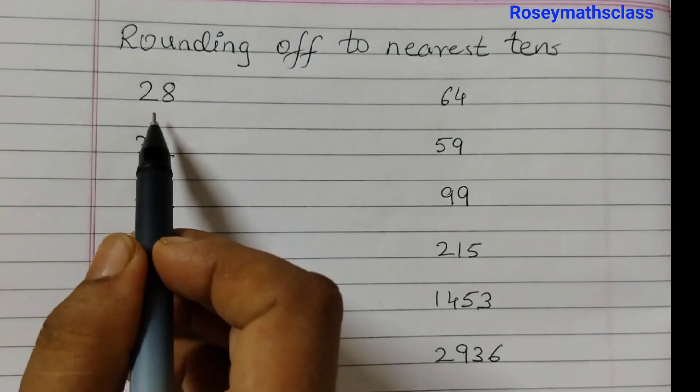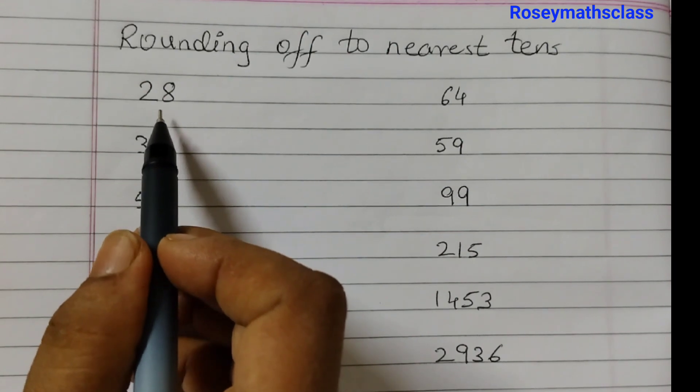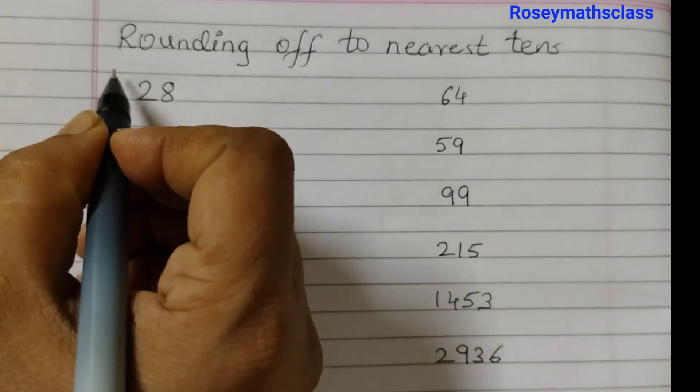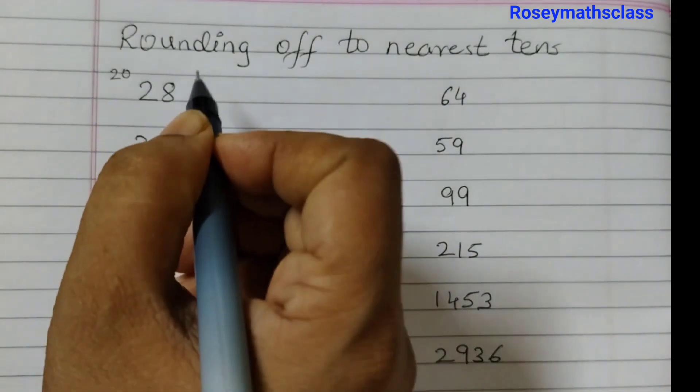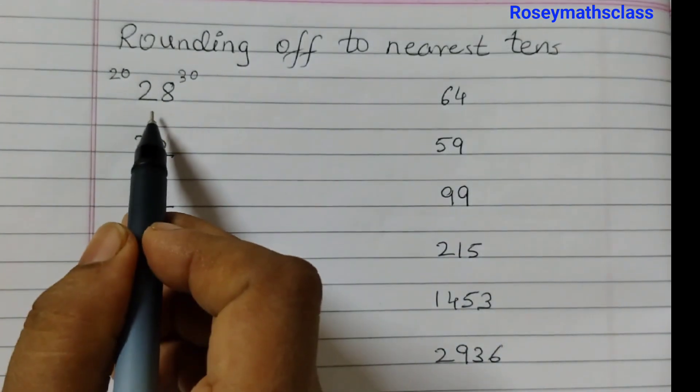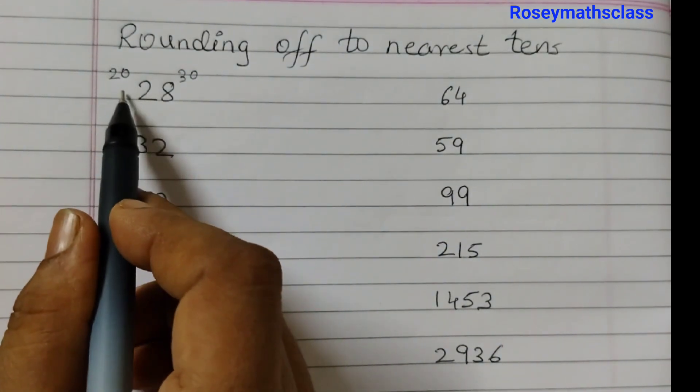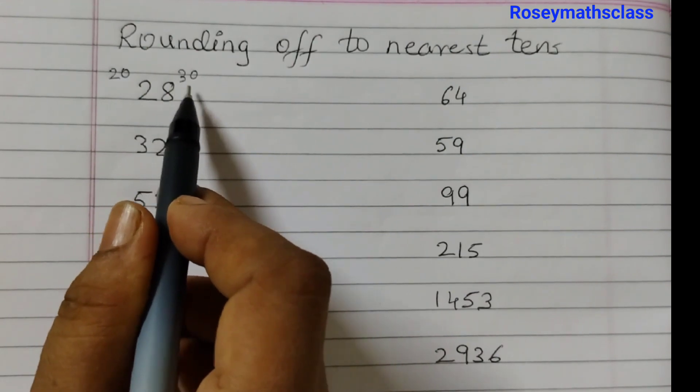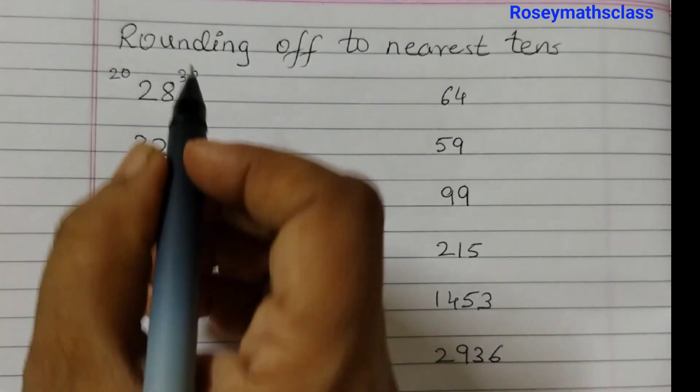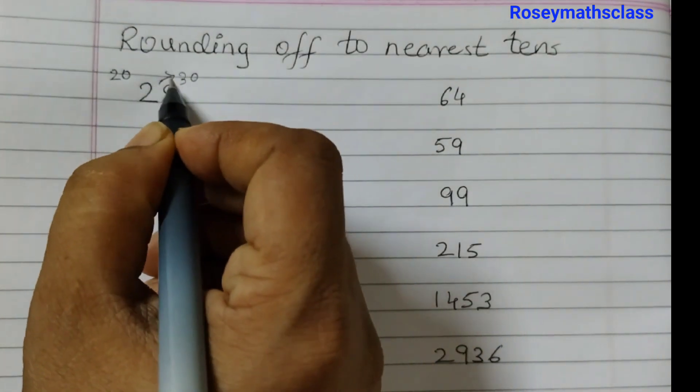Let's start with 28. We will see that 28 lies between which two tens. It lies between 20 and 30, and 28 is closer to 30. The gap is less, so we will round it off to 30.